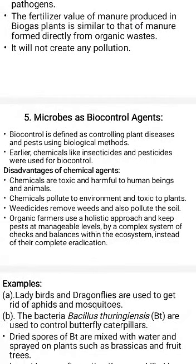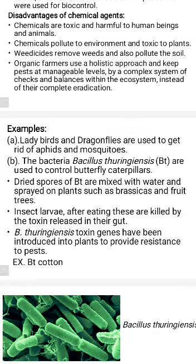Next, microbes as biocontrol agents. Some microbes are used to control different types of diseases. Generally we use chemical fertilizers for better crop production, but they cause environmental pollution. That is why nowadays microbes are used to control biological organisms. Number one: the bacteria Bacillus thuringiensis is used to control butterfly caterpillars. In biotechnology, one gene is extracted from Bacillus thuringiensis — the Bt gene — and introduced into plants to provide insect resistance, so that if an insect eats the plant, the crystal protein swells in the insect's stomach and the insect dies.